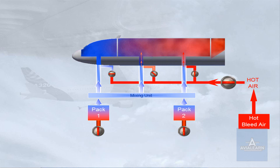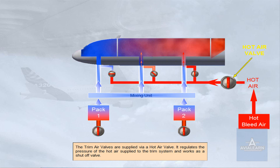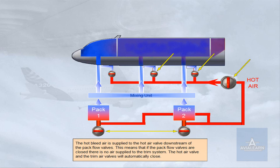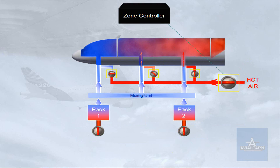The trim air valves are supplied via a hot air valve. It regulates the pressure of the hot air supplied to the trim system and works as a shut-off valve. The hot bleed air is supplied to the hot air valve downstream of the pack flow valves. This means that if the pack flow valves are closed, there is no air supplied to the trim system — the hot air valve and the trim air valves will automatically close. The trim air valves and the hot air valve are controlled by the zone controller.